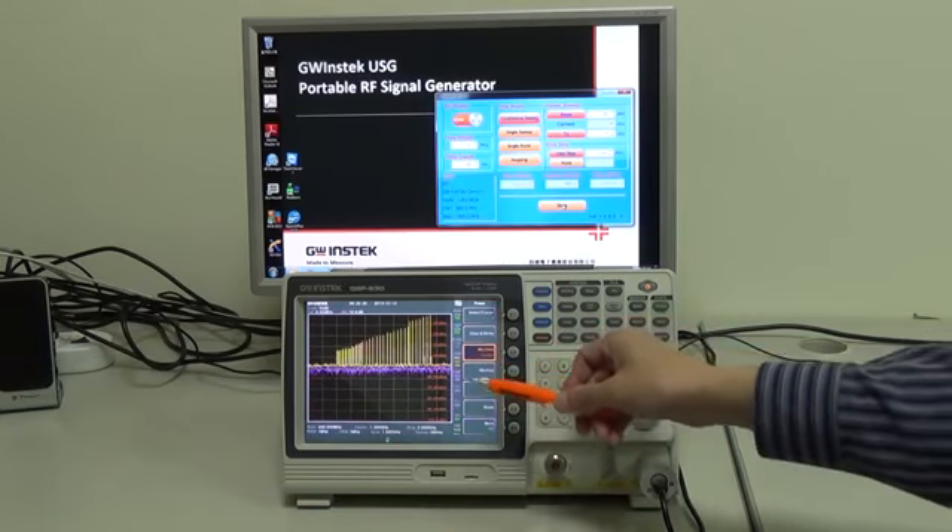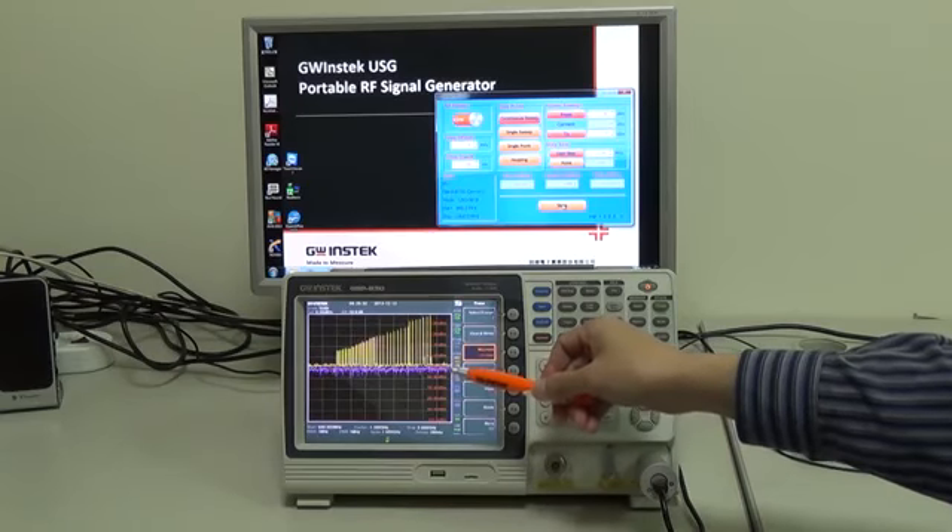The yellow trace illustrates the test result of maximum hold and the pink trace shows the test result of signal output.